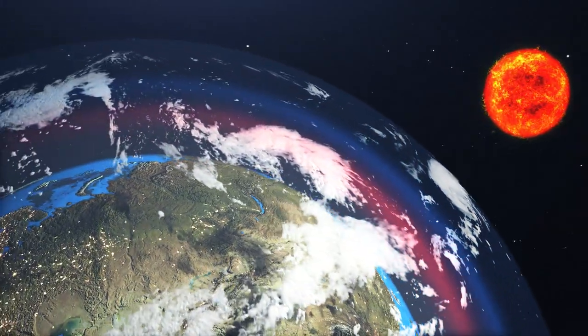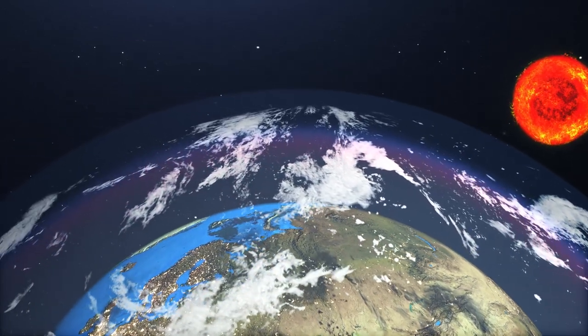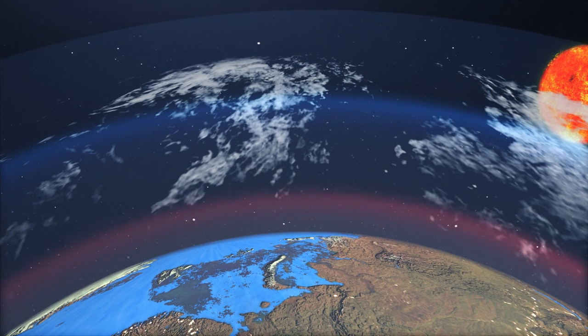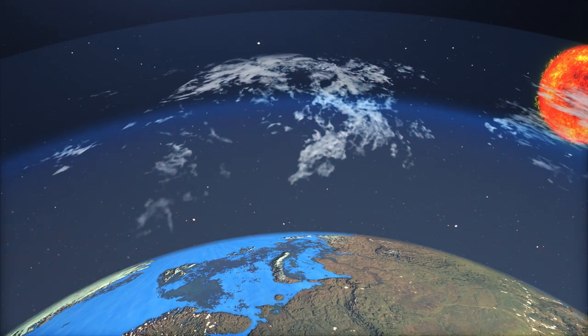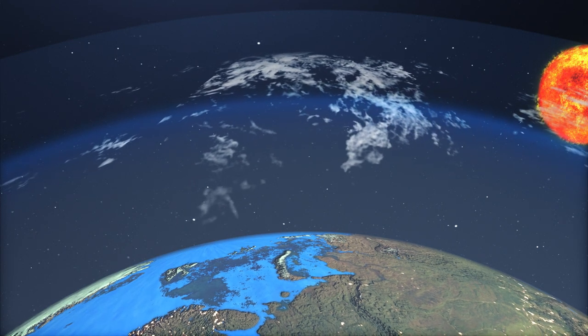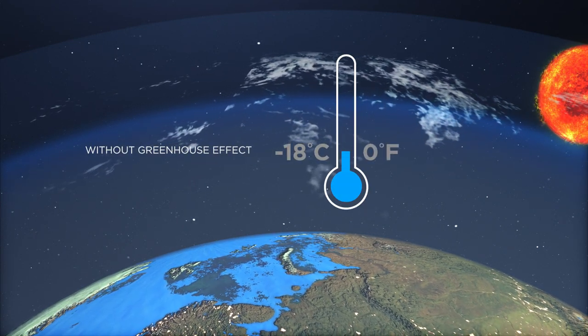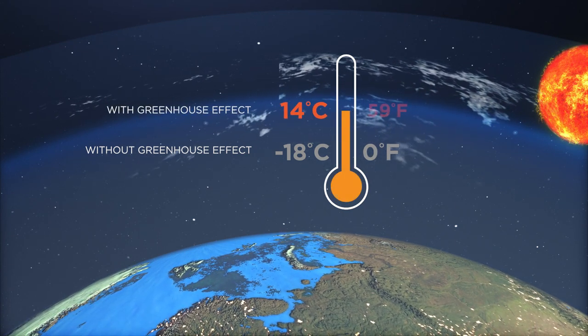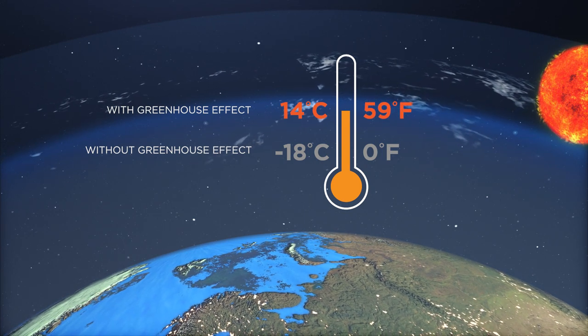Much of that heat is absorbed by the greenhouse gases and radiated back in all directions, warming the surface of the Earth and the lower atmosphere. Without this natural greenhouse effect, the Earth's average surface temperature would be an inhospitable minus 18 degrees Celsius, zero degrees Fahrenheit, instead of the approximately 14 degrees Celsius, 59 degrees Fahrenheit, we experience today.